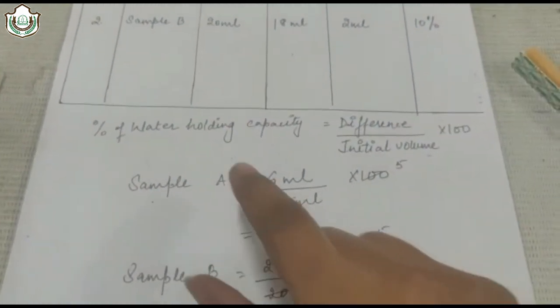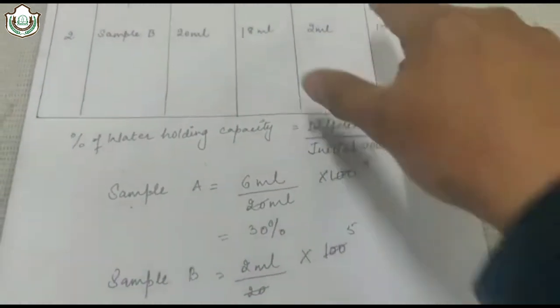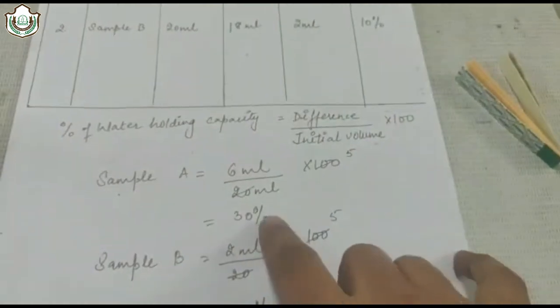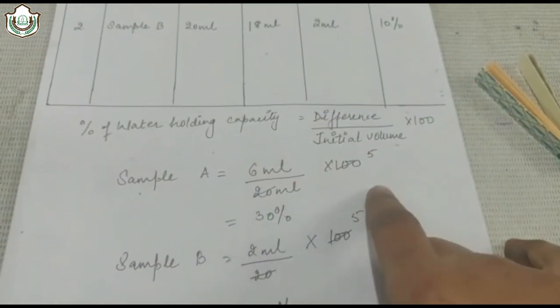Now you have to calculate the water holding percentage. Sample A difference upon initial volume into 100, that is 30 percent. And sample B contains 10 percent.